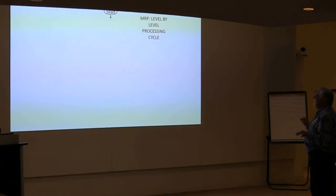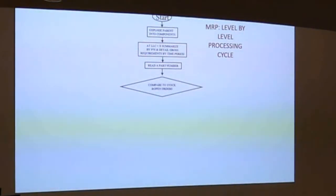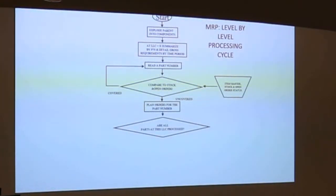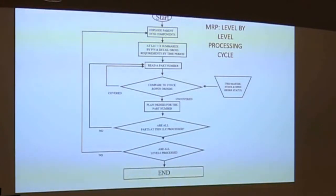Looking at the logic flow: start, explode the parent components at that low-level code X, summarize planned orders and gross requirements by time period, read the part number, compare to stock on hand. If covered, read another part number. If uncovered, plan orders for that part number. If all parts at this low-level code are processed, go back and read another part; otherwise explode the components. That's the basic logic flow of how MRP does its explosion, low-level code by low-level code.